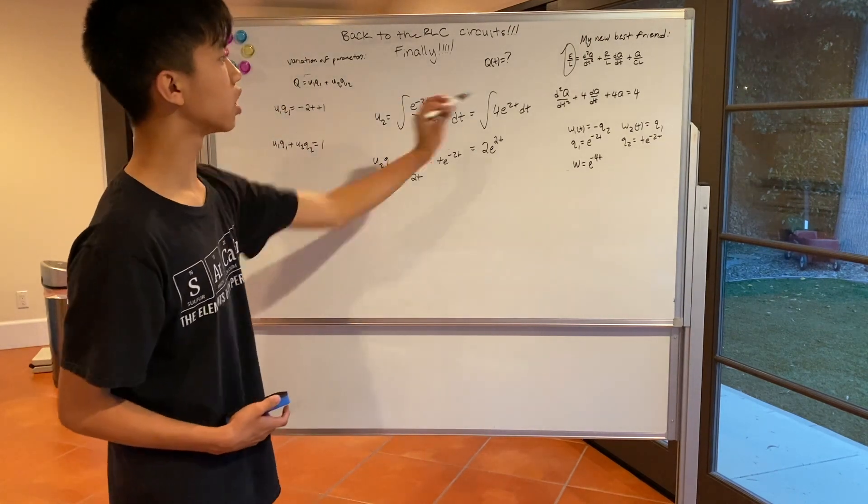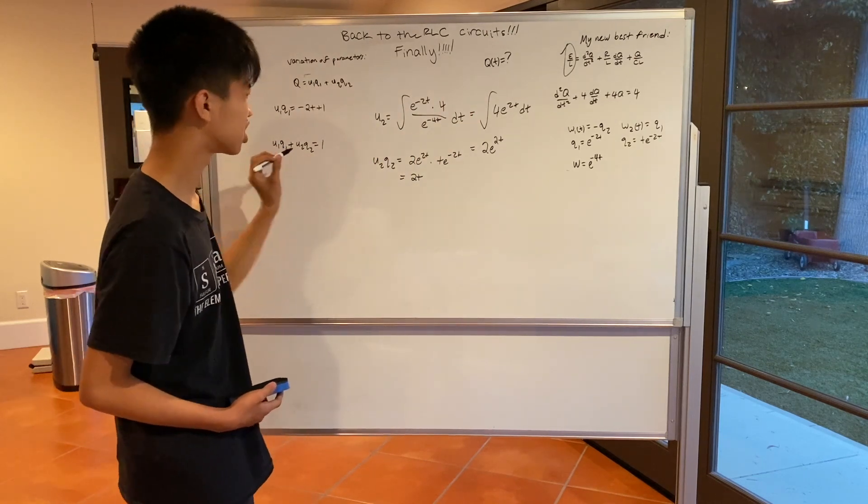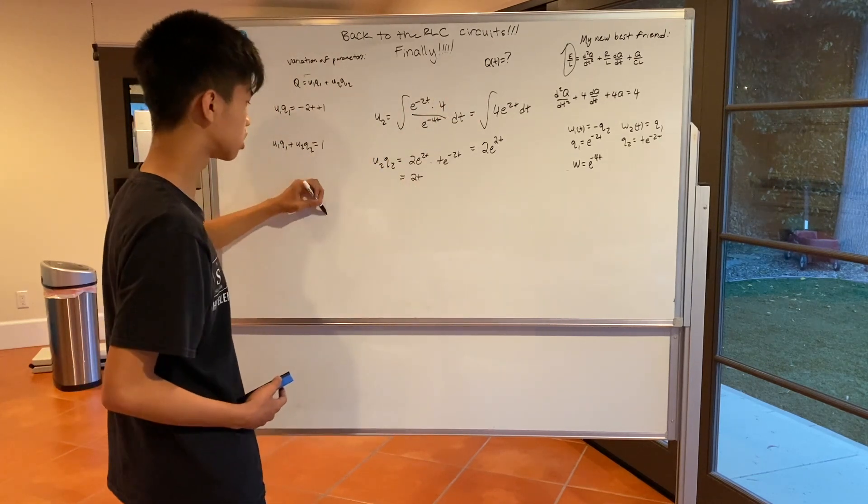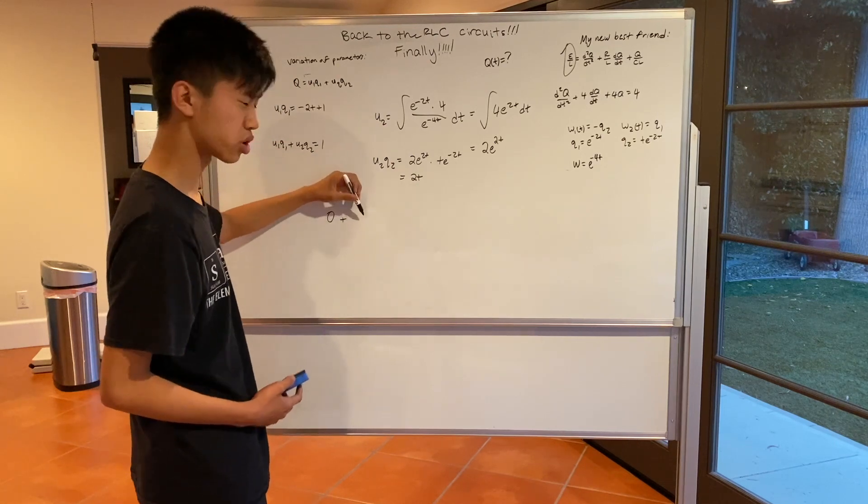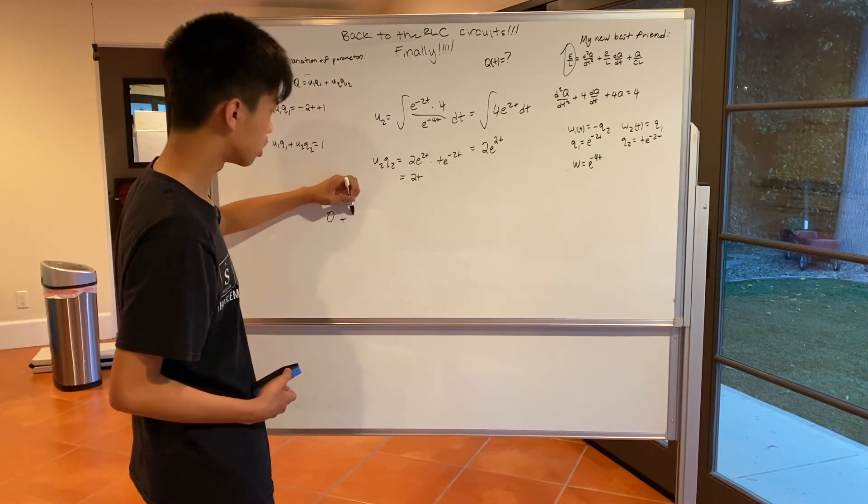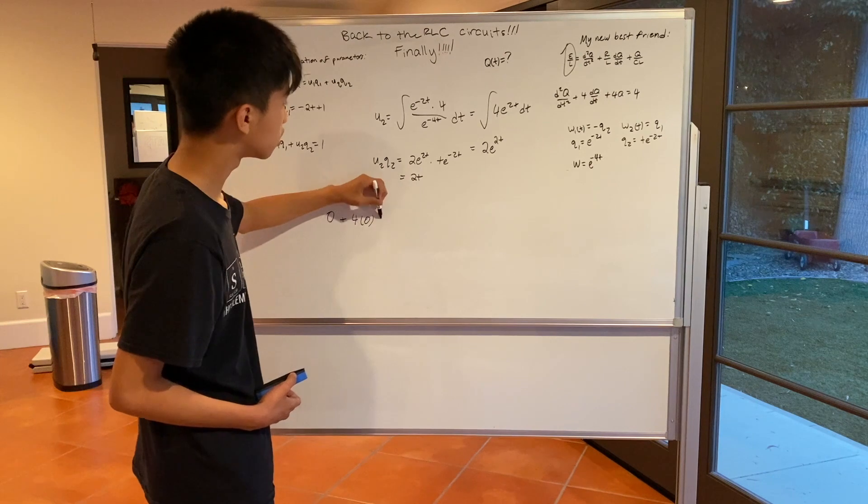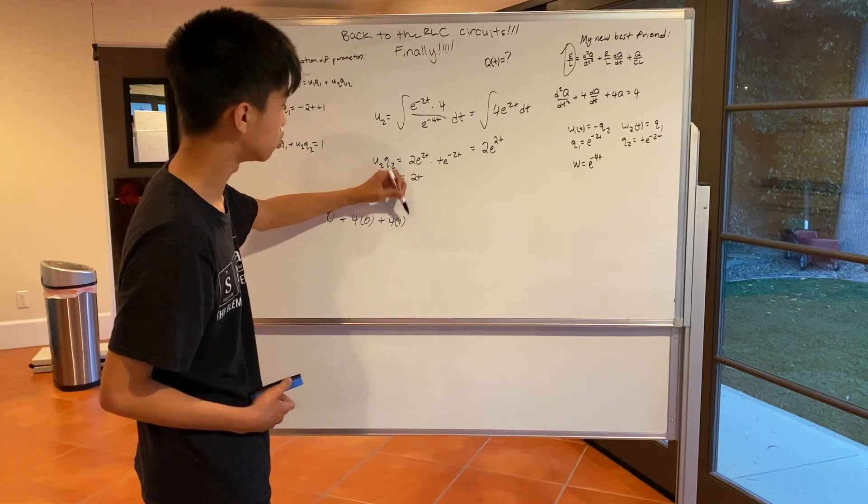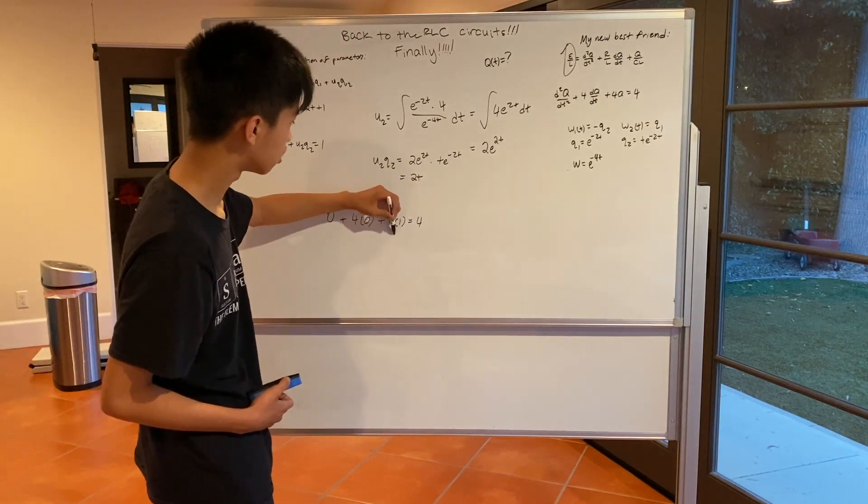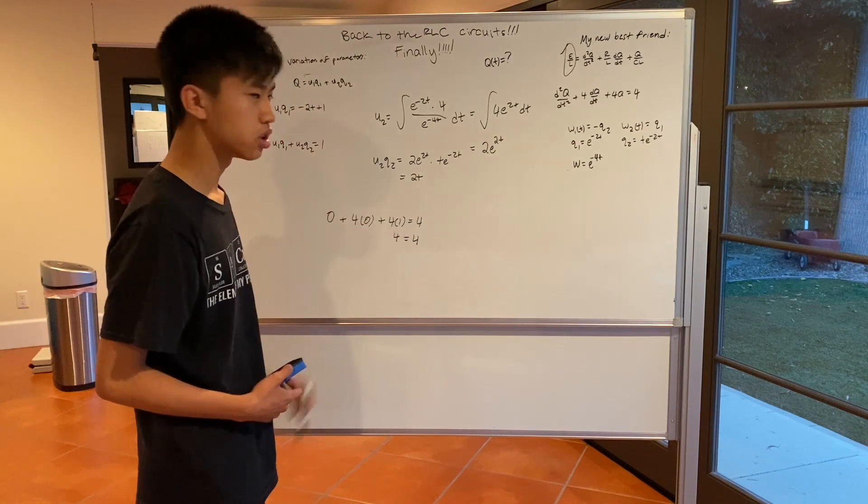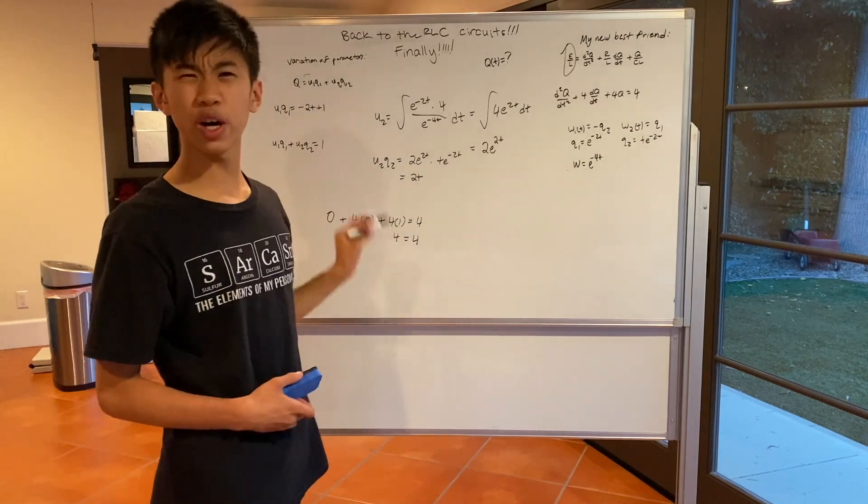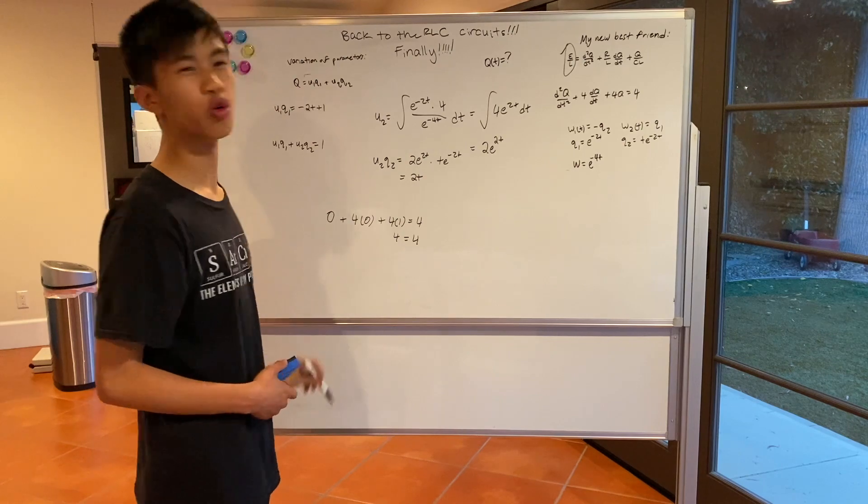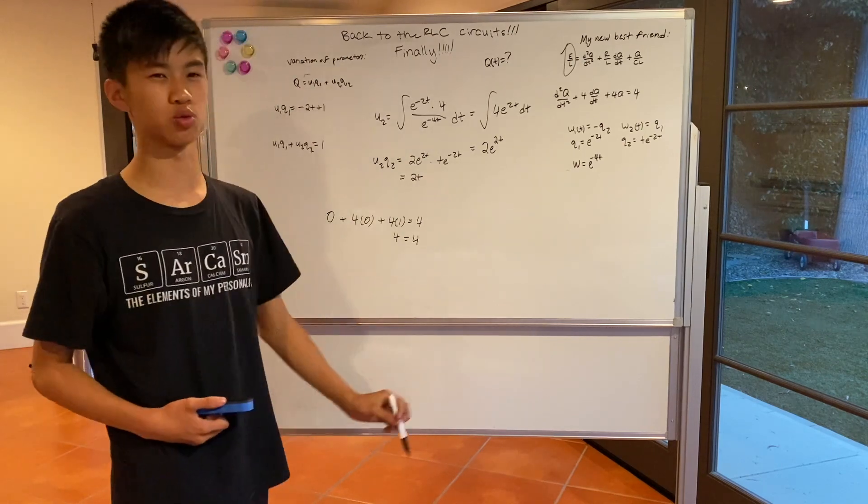And if you plug that into the equation, well, the second derivative of 1 is obviously 0. The first derivative of 1 is obviously 0. So you can plug in 1 to Q, and you get 4. So, did I really have to do that entire variation of parameters to find that 4 equals 4 and that the solution was 1?